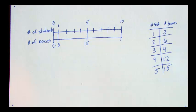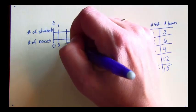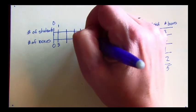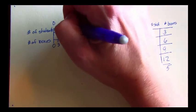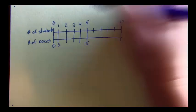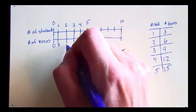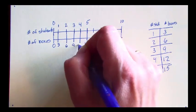I can use this information to find how many students and how many boxes all along. 2, 3, 4 students would have 6, 9, 12 boxes.